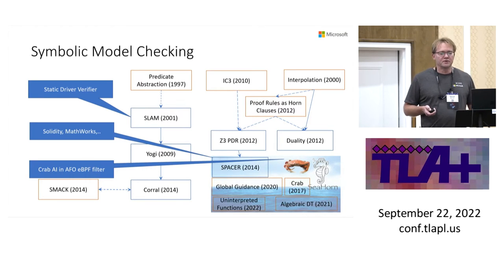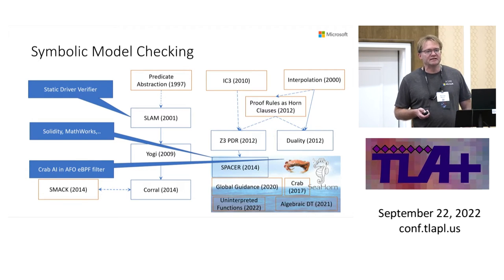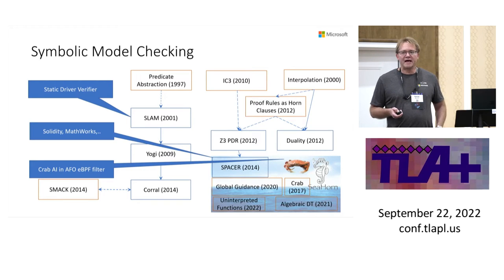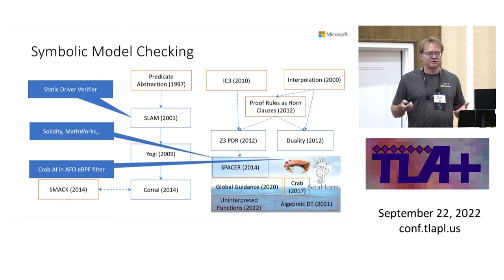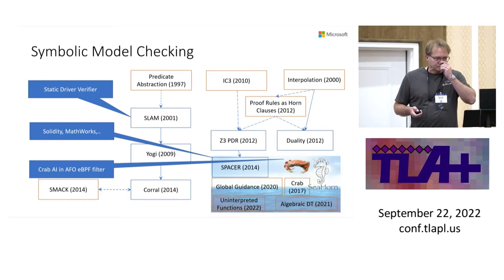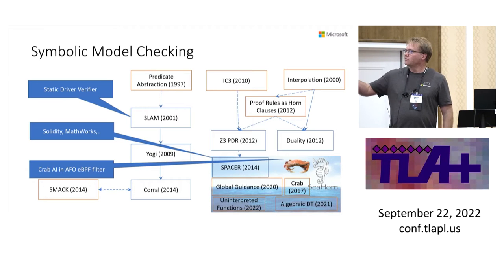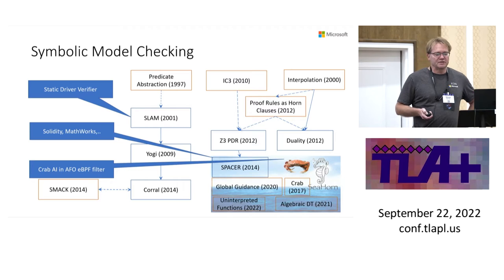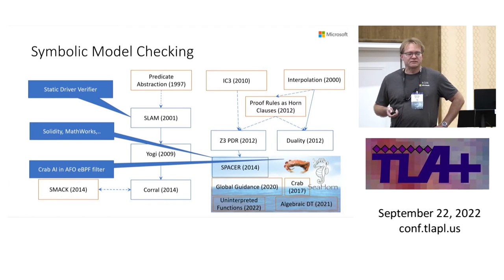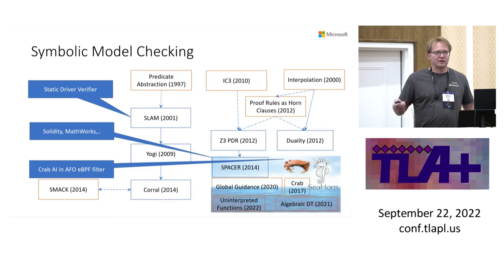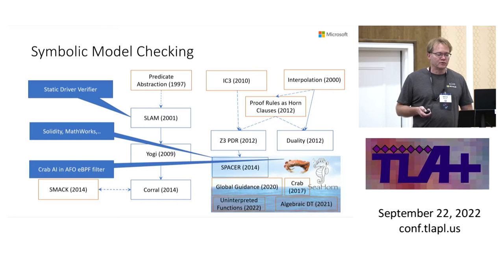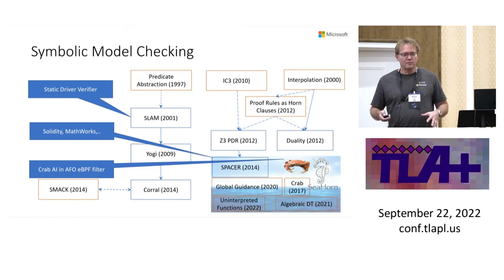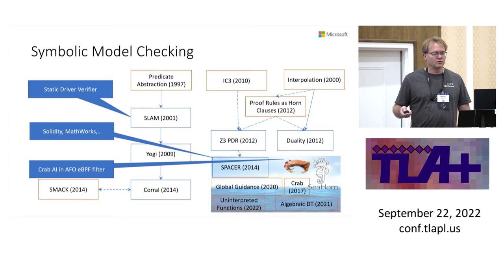There was another thread using constraint horn clauses, where the idea is that you can encode the symbolic model checking problem as a logical formula and solve it. The question is whether you have engines to solve such classes of logical formulas called constraint horn clauses. You can take the program control flow graph and encode it entirely in logic and solve for it. There's a sequence of tools developed based on insights that encoding proof rules amounts to solving horn clauses. Today the Spacer tool, a component in Z3, is a solver for such horn clauses and is embedded in a larger tool called C-HORN.